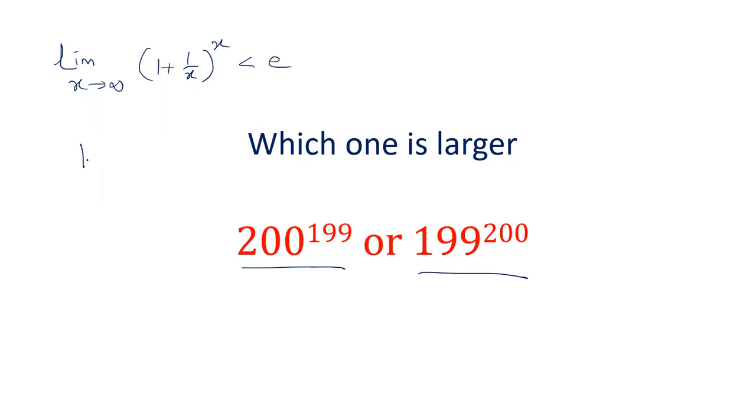For example if I take the value of x is a very small value 1 plus 1 by 2 power 2 the value will be 3 by 2 square that is 9 by 4 so which is 2.25.